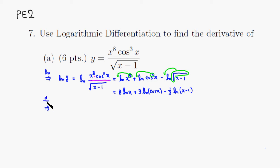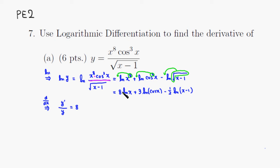We take the derivative with respect to x. When you take the derivative of the natural log of anything, put whatever is inside the natural log on the bottom and take the derivative, putting it on top. From the left-hand side we get 1 over y times y prime. On the right-hand side, 8 is a constant multiple, so we have 8 times 1 over x.